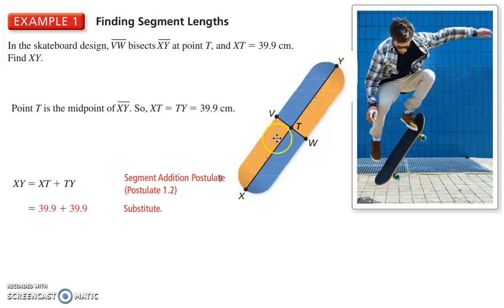39 and 39, add it together gives us 79.8. Pretty straightforward there.